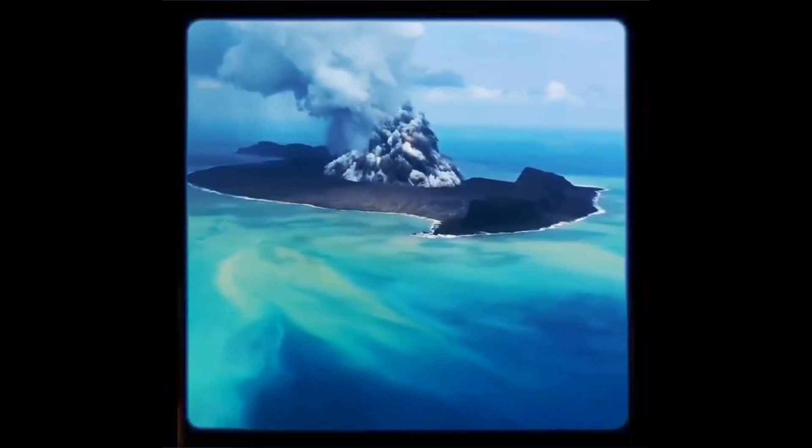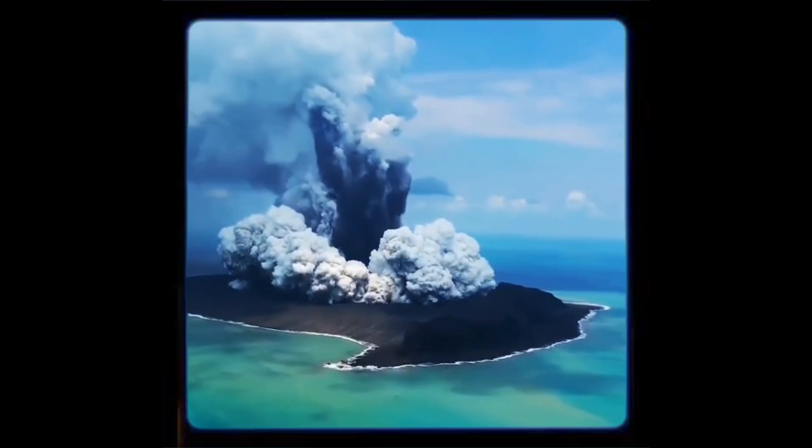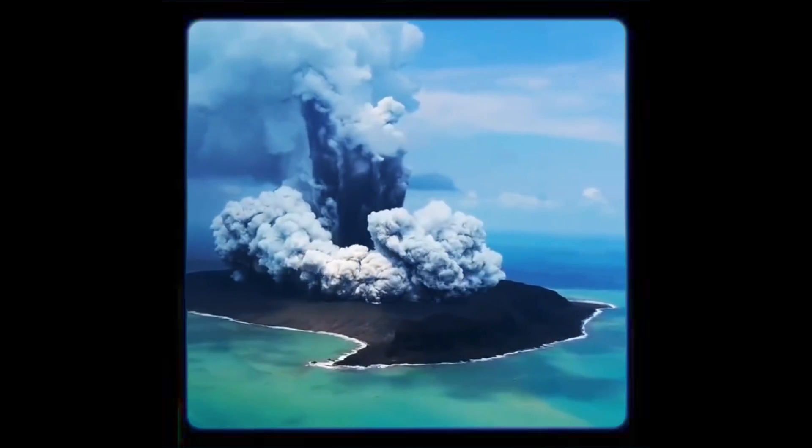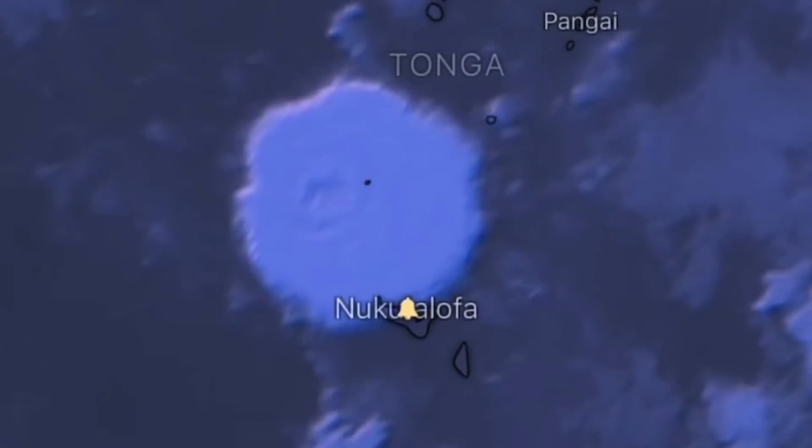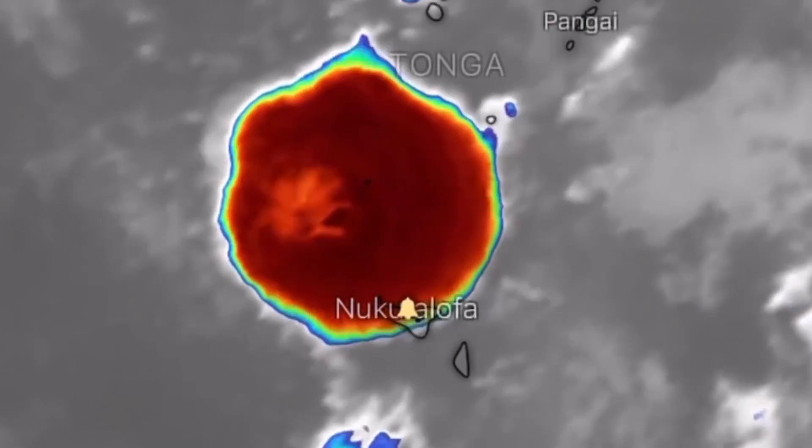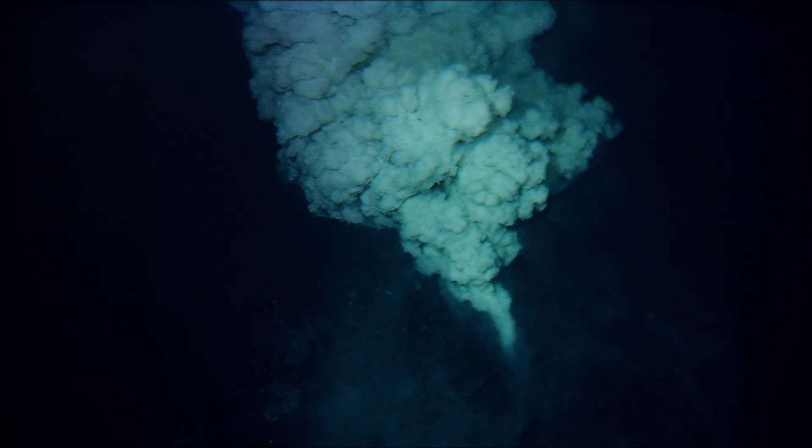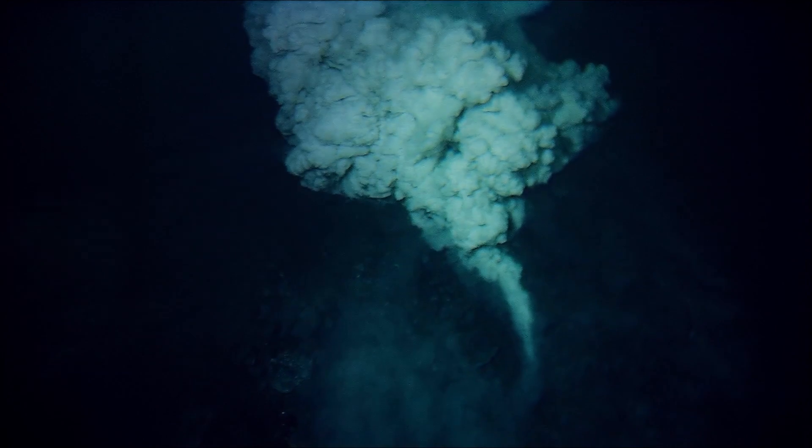In March 2009, an explosive eruption shot steam, volcanic gases and volcanic ash 800 meters into the sky, coating the 63-kilometer or 39-mile distant uninhabited island of Hunga Harpie in black volcanic ash.